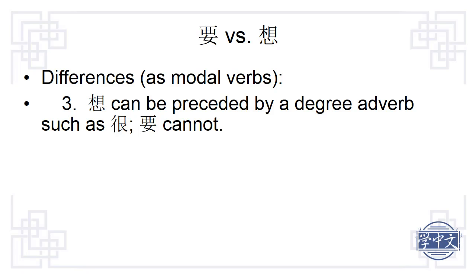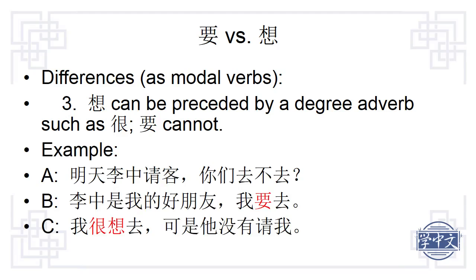The third difference is 想 can be preceded by a degree adverb such as 很, but 要 cannot. In this dialogue, Person A asks 明天李中请客，你们去不去 — Tomorrow 李中 is hosting a dinner party, are you going? Person B says 李中是我的好朋友，我要去 — 李中 is my good friend, I want to go and I will go. Person C says 我很想去，可是他没有请我 — I very much want to go, but he did not invite me. Grammatically, 我很想去 is correct, but 我很要去 is never acceptable, no matter how strong your intention is.